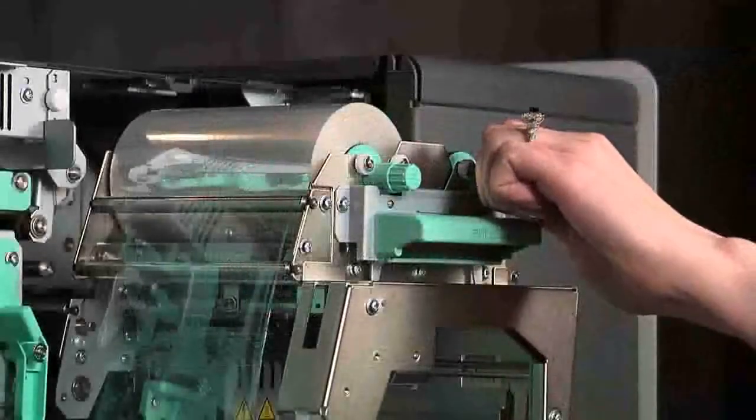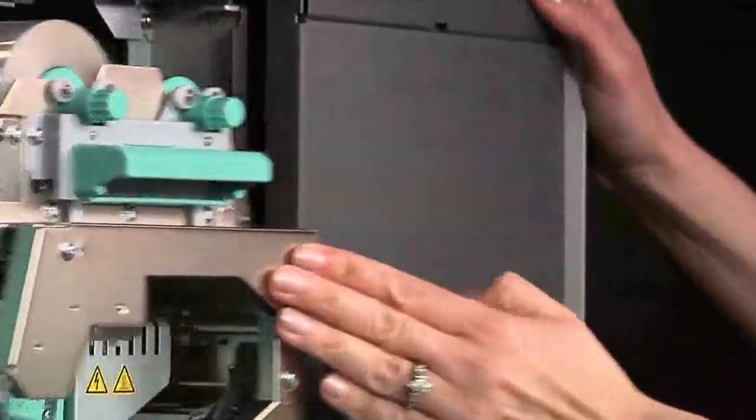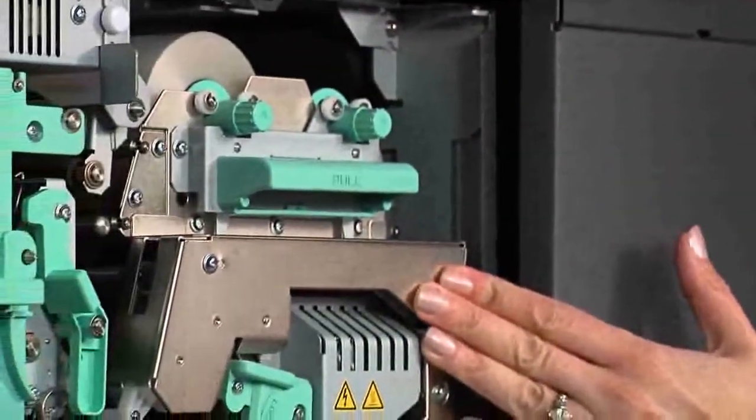Make sure the ribbon is tight by turning the take-up roller counterclockwise. Slide the retransfer ribbon carrier into the printer until you feel a click.